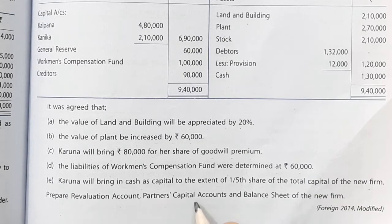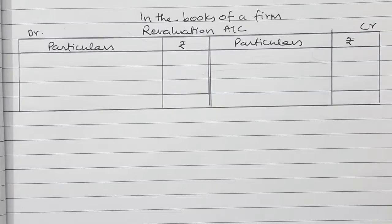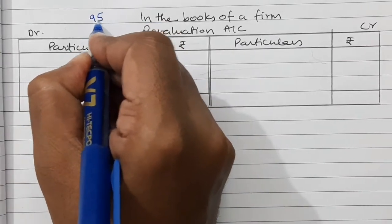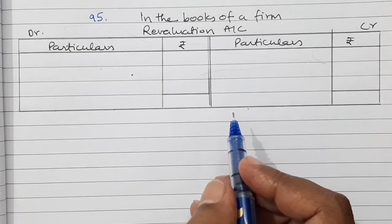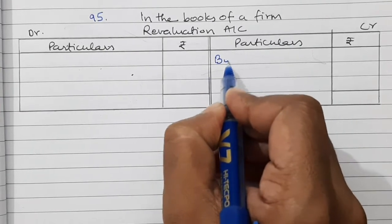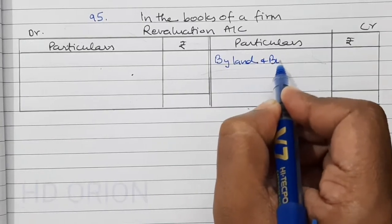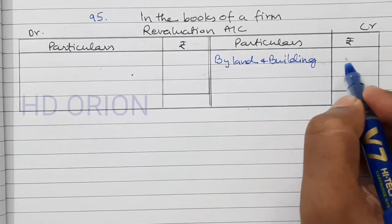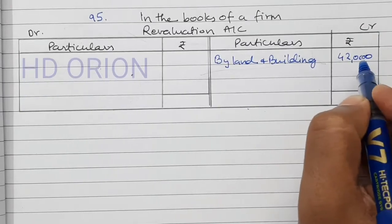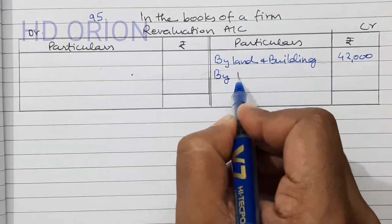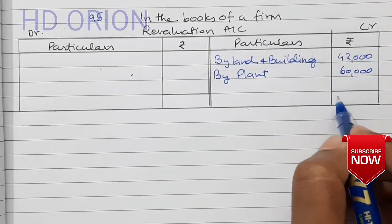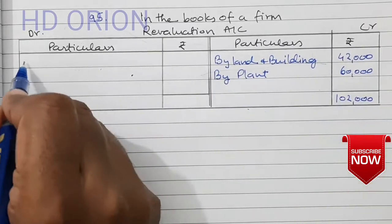Prepare revaluation account, partners' capital account and the balance sheet of the new firm. Let us see the solution. In the books of the firm, revaluation account: land and building assets are appreciating by 20%, so it is 42,000. Plant is also increasing by 60,000. So 1,02,000 goes to profit on revaluation.